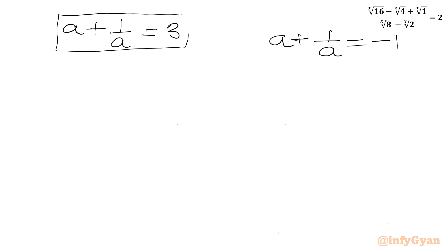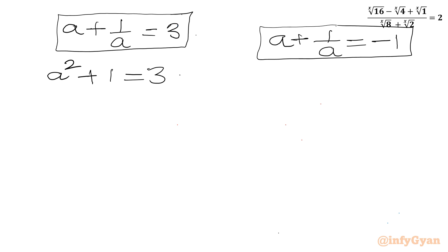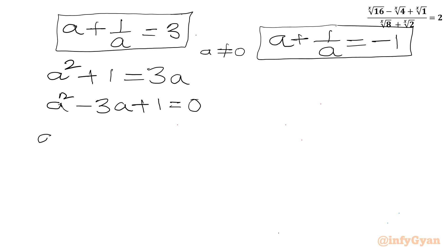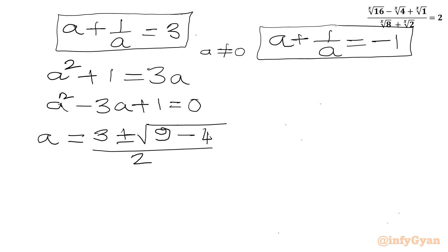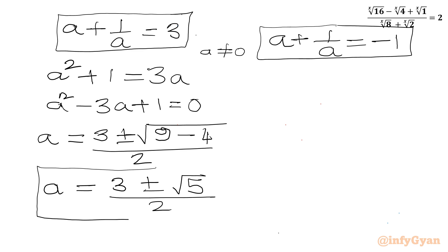For the first equation, a + 1/a = 3: multiplying both sides by a (since a is non-zero) gives a² + 1 = 3a, so a² - 3a + 1 = 0. Applying the quadratic formula: a = (3 ± √5) / 2. These are real values of a.